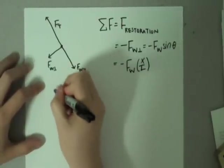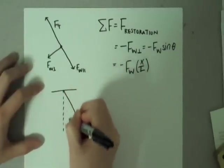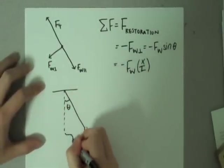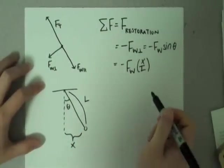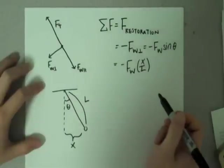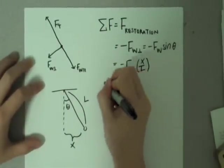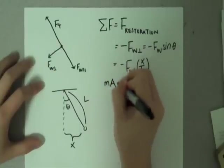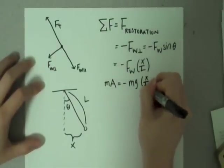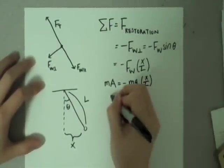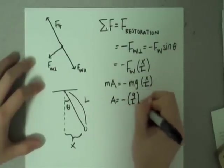Negative force of weight sin theta is also equal to negative force of weight times x over L. This is because x is the base of this triangle and L is the length of the string, so we get opposite over adjacent. Now, because this is the sum of the forces, we write this as mass times acceleration equals negative mg over L times x. And by simplifying, we get A equals negative g over L times x.